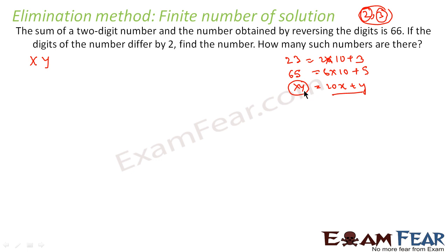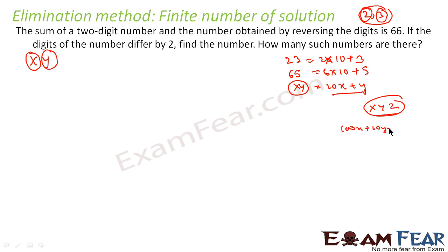For a two-digit number with digits x and y, the numerical value is 10x plus y. For a three-digit number xyz, it is 100x plus 10y plus z. For example, 352 is 3 into 100 plus 5 into 10 plus 2. This concept is clear: if x and y are the two digits, the number is 10x plus y.